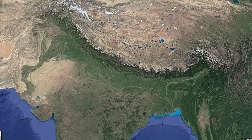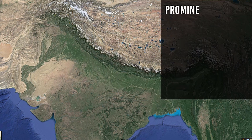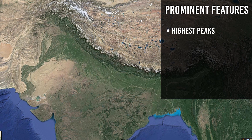The Himalayas vary in width from 400 km in Kashmir to 160 km in Arunachal Pradesh. Altitudinal variations are greater in the eastern part than in the western part. The Himalayas' prominent features are highest peaks, deep valleys, gorges, and glaciers.